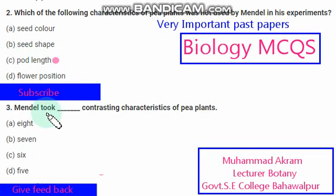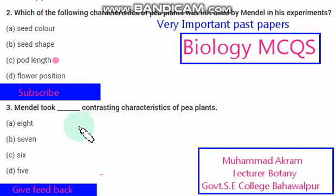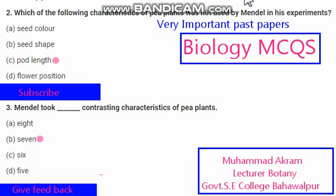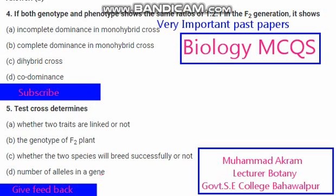Mendel took contrasting characteristics of pea plants. The right option is option B, seven characters.